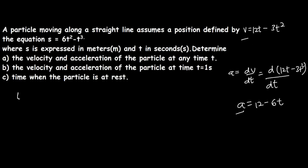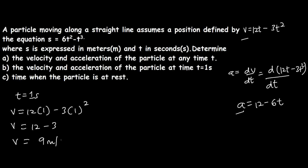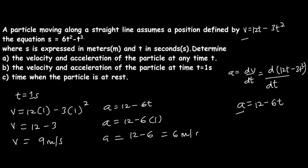The acceleration at any time t equals d/dt of (12t minus 3t²) equals 12 minus 6t. At time t equals 1 second, velocity equals 12(1) minus 3(1²) equals 12 minus 3 equals 9 meters per second. And acceleration equals 12 minus 6(1) equals 12 minus 6 equals 6 meters per second squared.